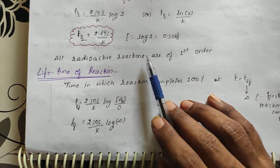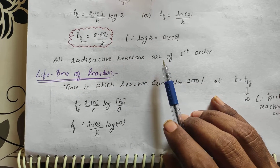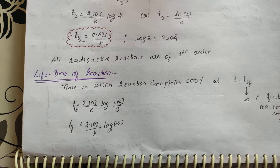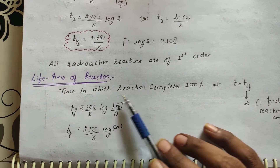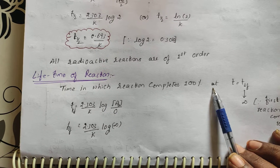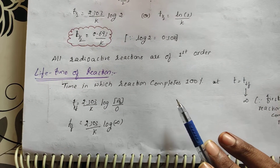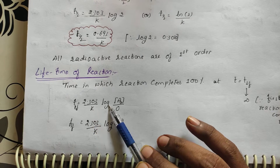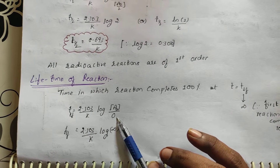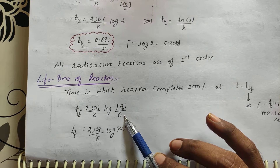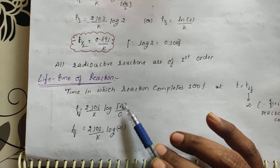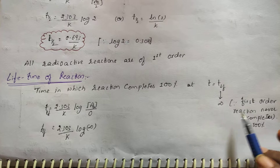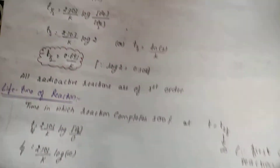All radioactive reactions come under first order kinetics. Regarding the lifetime of the reaction — meaning the time for 100% completion — for first order reactions this never happens. Substituting final concentration = 0 gives A₀/0 = infinity, so T lifetime = infinity. The reaction will never complete 100%.